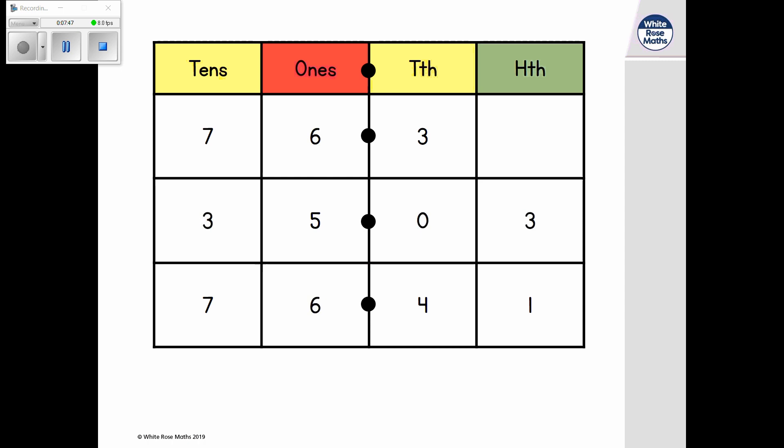We want to start with the smallest number. Let's begin by looking at the tens column. The number with the fewest tens is 35.03. This is the smallest number.